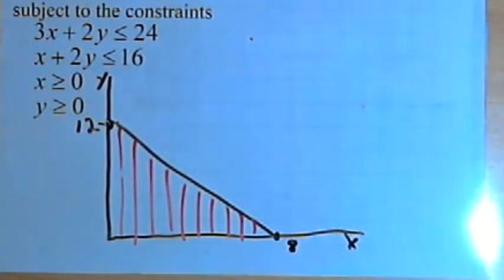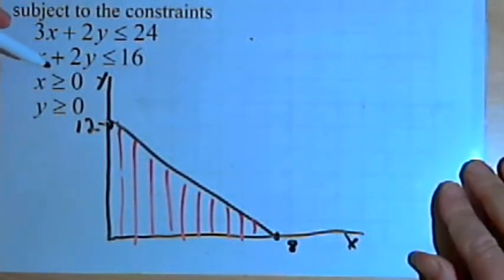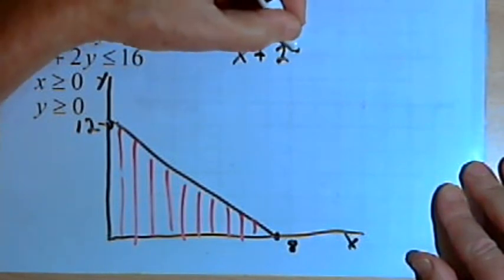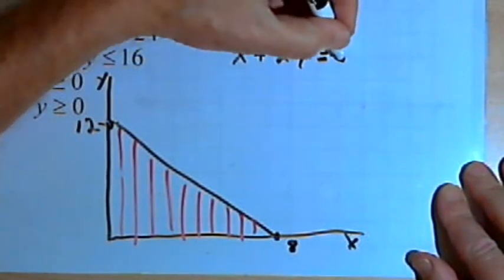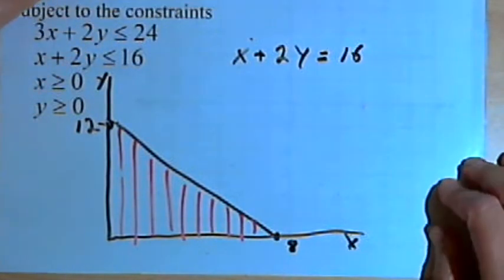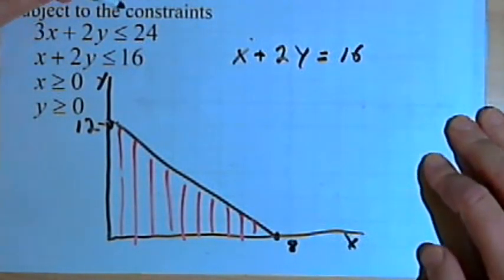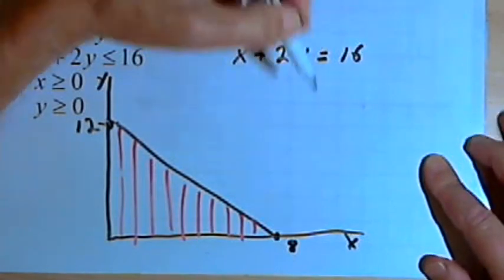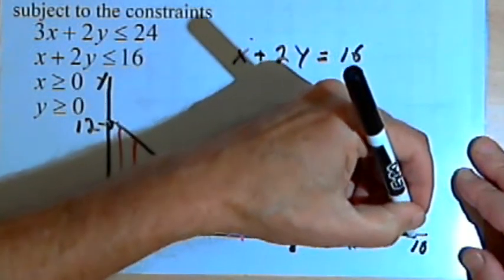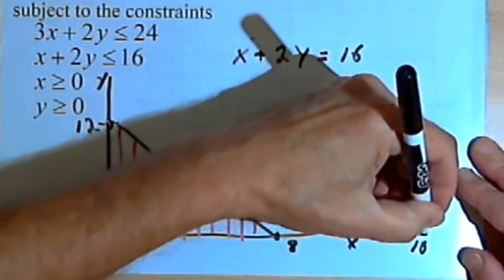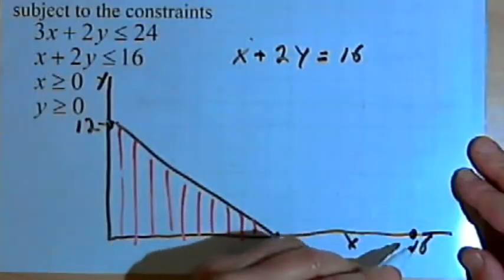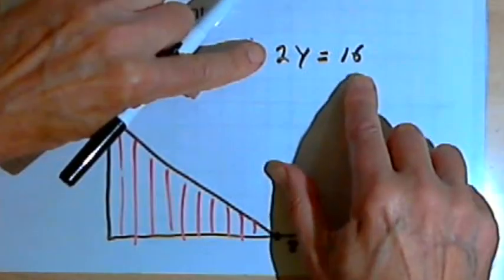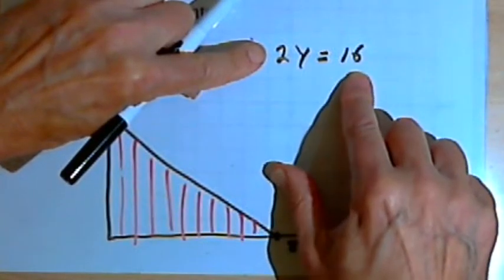Now let's go on to the second inequality and do the same thing. This is x plus 2y, I'll make that an equation, equals 16. I want to find the x and y intercepts. So when y is 0, x would equal 16. So I'll have an x-intercept at x equals 16. And when x is 0, I would have 2y equals 16, so y would equal 8.